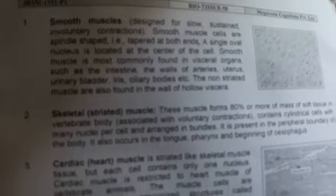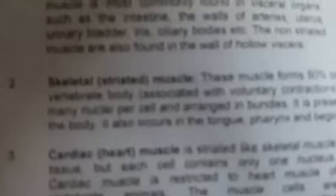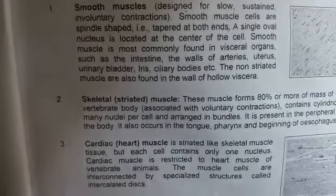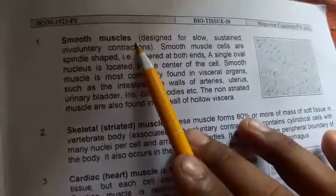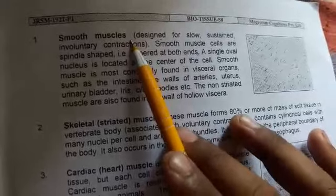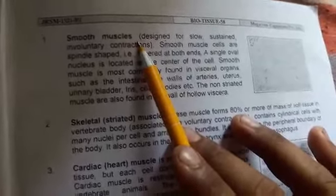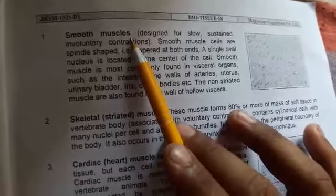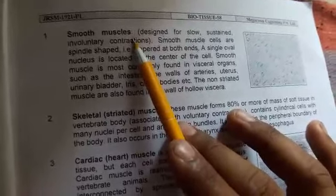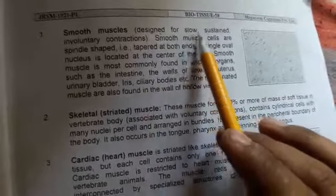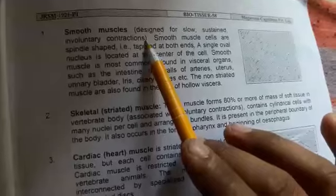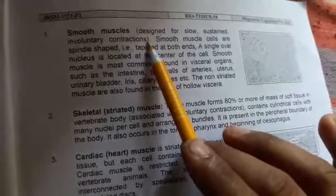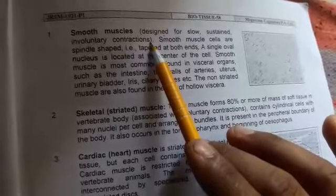We can see here about the smooth muscles, skeletal or striated muscle, and cardiac or heart muscle. First one is smooth muscle. Smooth muscles are of three types. So smooth muscles kya hote hain — muscular tissue mein we are looking at slow, sustained, involuntary contractions. Smooth muscles ka use hota hai — not at a high level but slowly, it contracts.